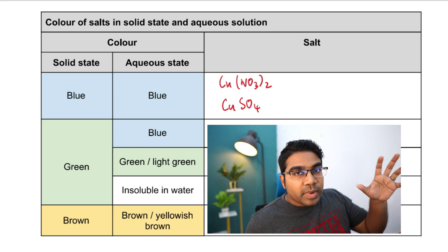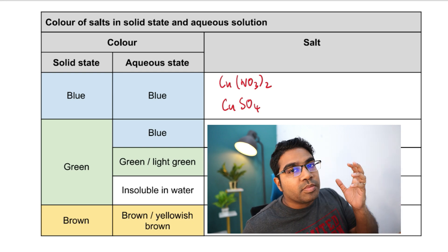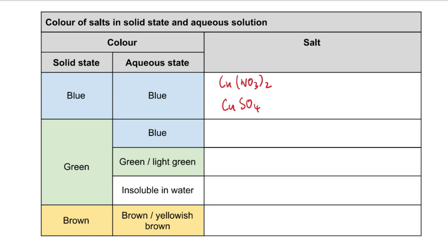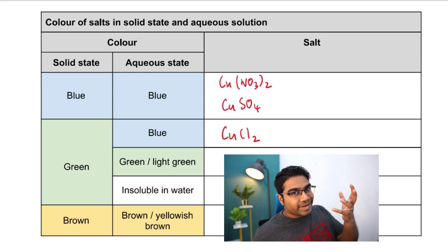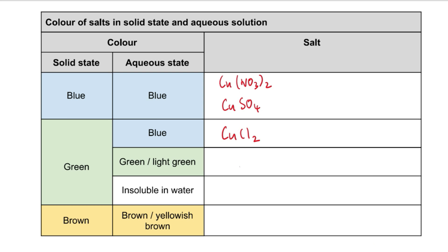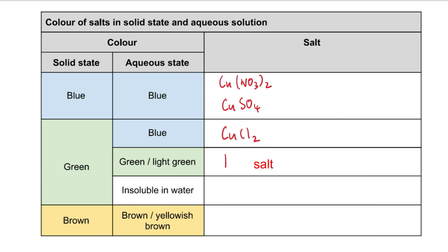If we have a green color salt, there are many possibilities. If the salt manages to dissolve in water to form a blue solution, a blue solution indicates the presence of Cu2+ ion. Therefore, if it is green in the solid state but forms a blue solution, the salt is copper(II) chloride, CuCl2. If a green solid dissolves to form a green solution, a green solution indicates the presence of Fe2+.